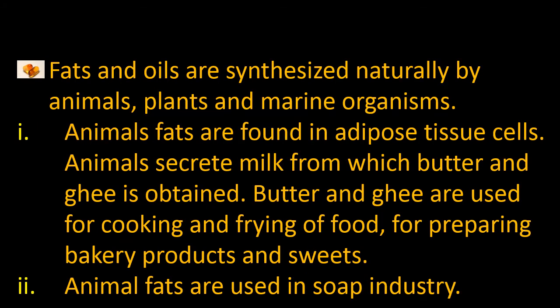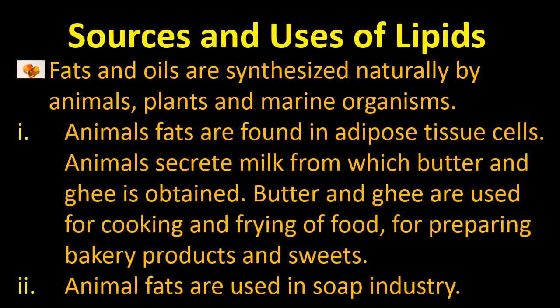Fats and oils are synthesized naturally by animals, plants, and marine organisms. Animal fats are found in adipose tissue cells. Animals secrete milk from which butter and ghee are obtained. Butter and ghee are used for cooking, frying of food, preparing bakery products, and sweets. Animal fats are also used in the soap industry.